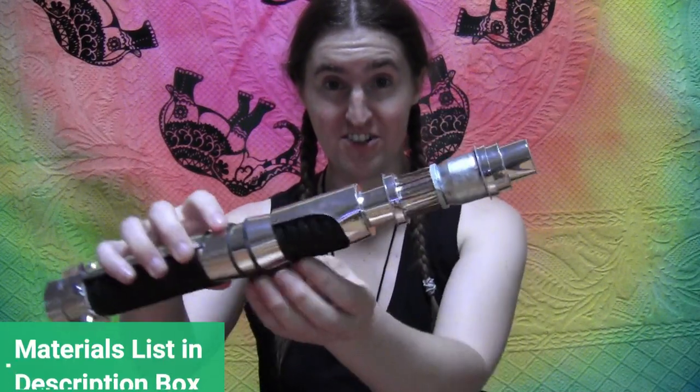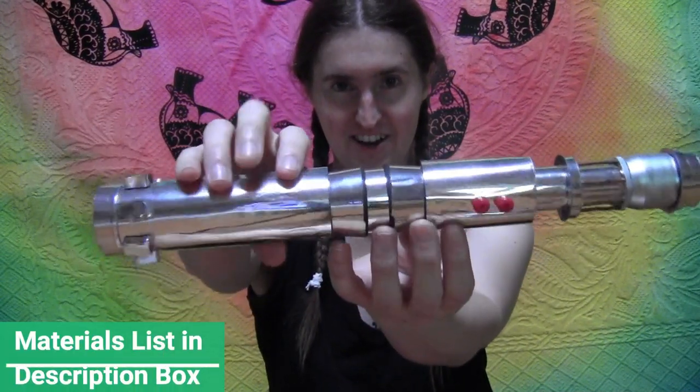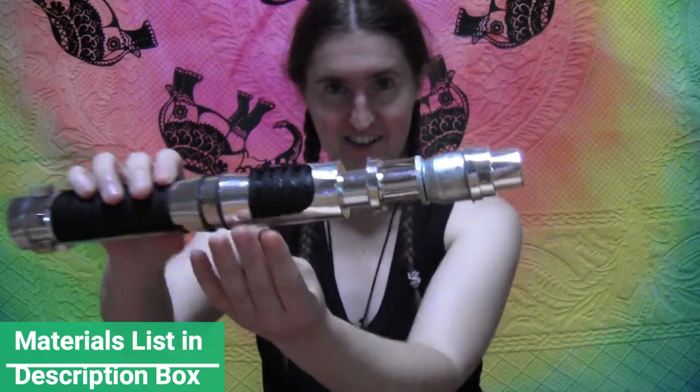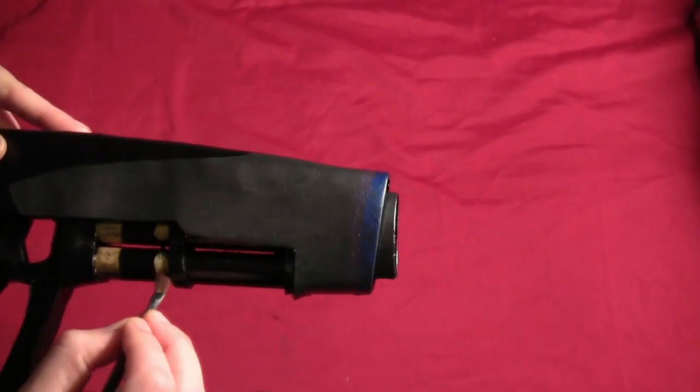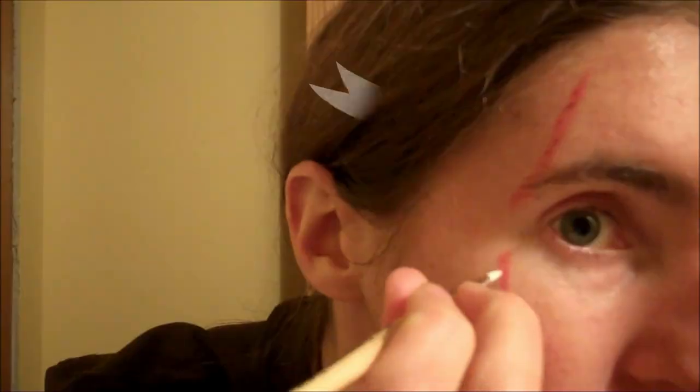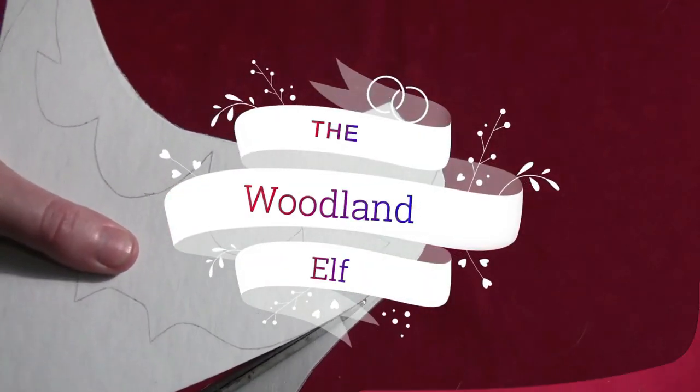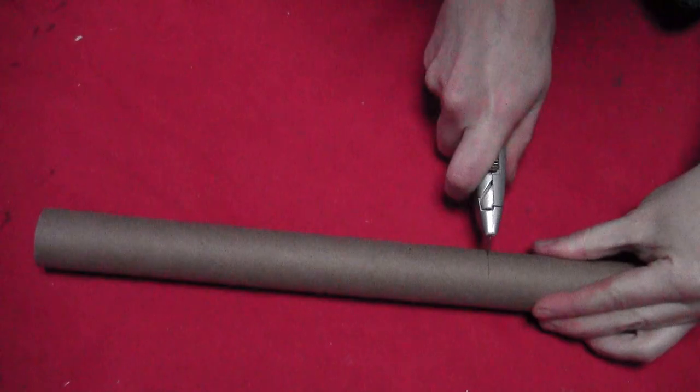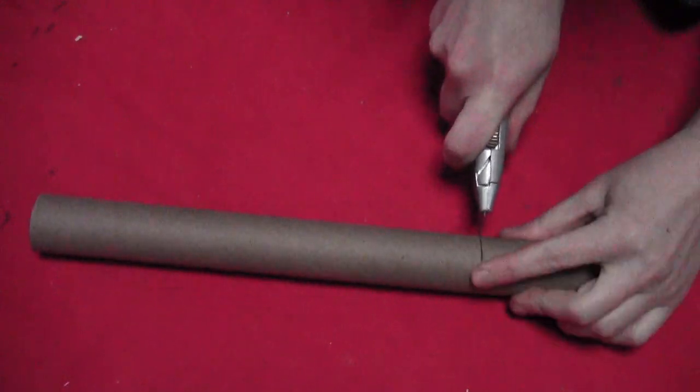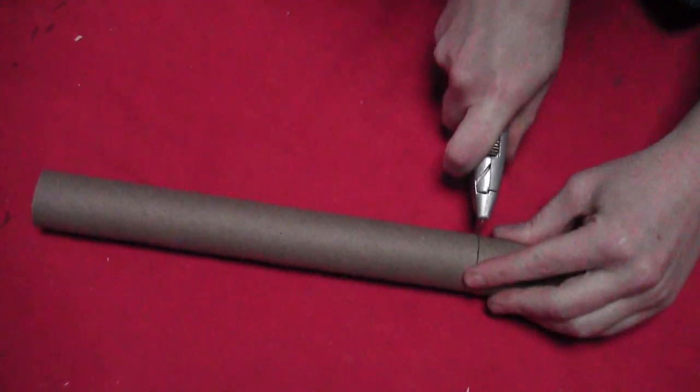So today we're going to be making Kyle Katarn's lightsaber. I started with an old wrapping paper roll and cut it down to size. Mine was about nine and a half inches, but I think that's actually a bit too long.